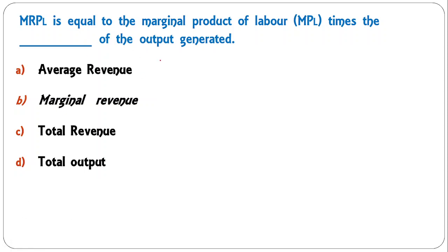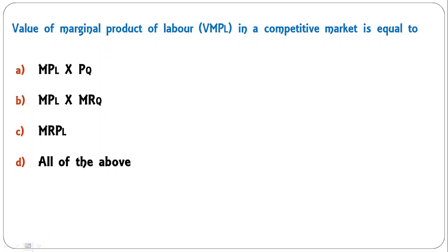MRPL equals marginal product of labor multiplied by the dash of the output generated — average revenue, marginal revenue, total revenue, or total output? We are talking about marginal revenue product, so marginal product of labor is multiplied by marginal revenue of the output generated to get MRPL. So B — marginal revenue — is the correct answer.